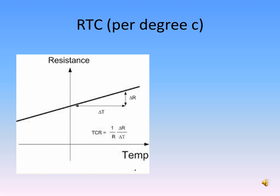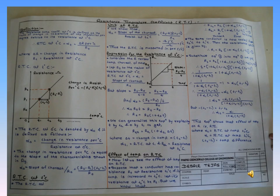As the temperature increases, the resistance also increases. We can define RTC, which is the change in resistance per ohm of original resistance per degree centigrade change in temperature from the given temperature. We can also define RTC — resistance temperature coefficient — as the ratio of change in resistance per degree centigrade change in temperature to the resistance at T degrees centigrade or 0 degrees centigrade. The unit for RTC is per degree centigrade.